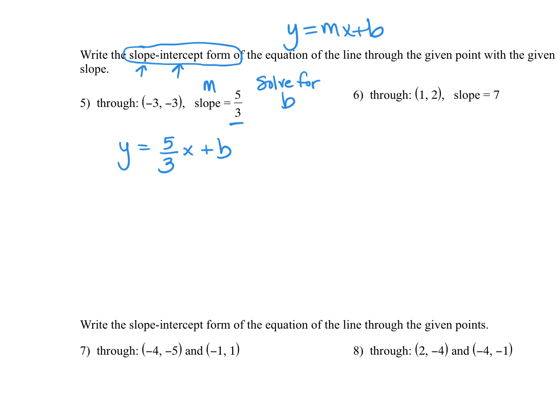Now, again, we're solving for b. So the question is, what values am I going to use for x and y? Well, that's exactly what my coordinate or my point is. Those are my x and y values. y is -3, and in this case x is also -3.